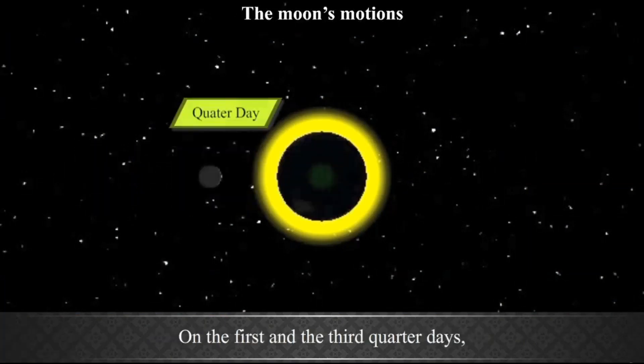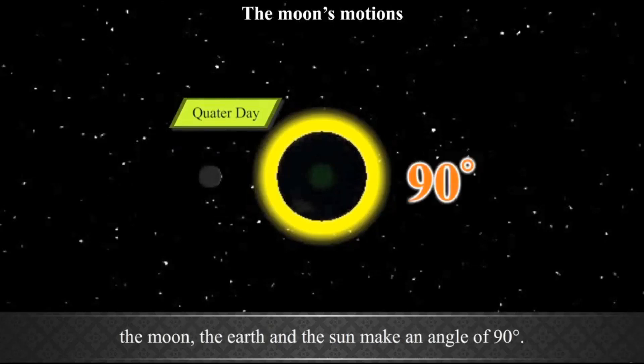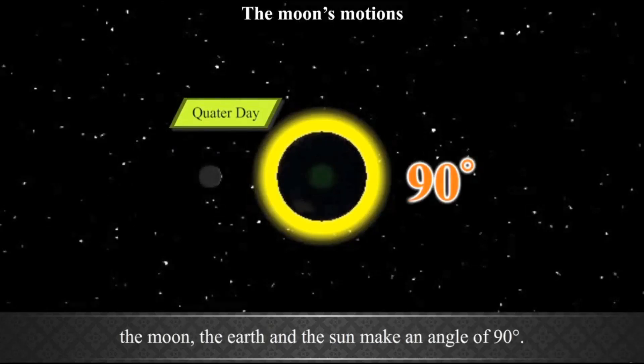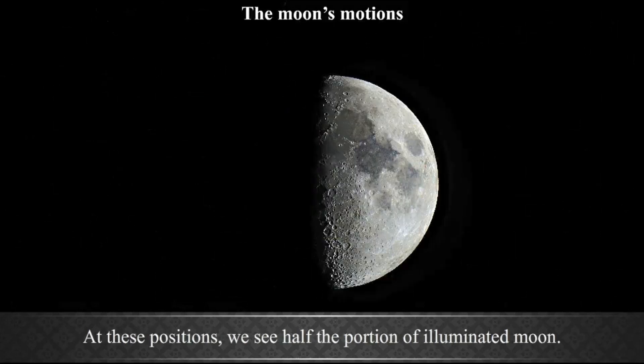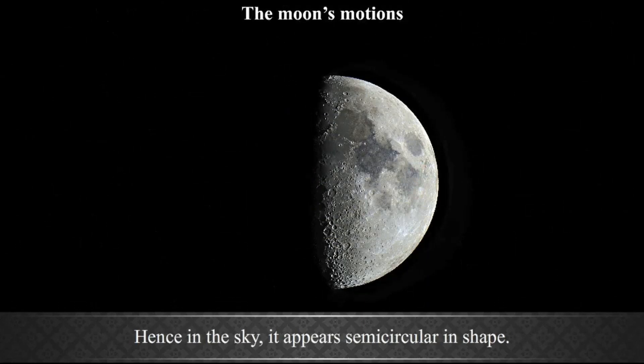On the first and the third quarter days, the Moon, the Earth and the Sun make an angle of 90 degrees. At these positions, we see half the portion of illuminated Moon. Hence, in the sky, it appears semi-circular in shape.